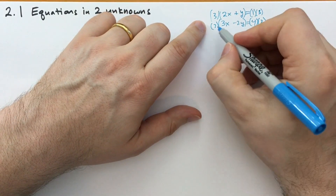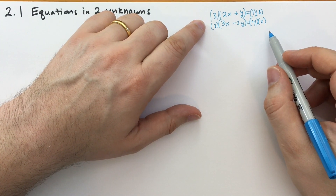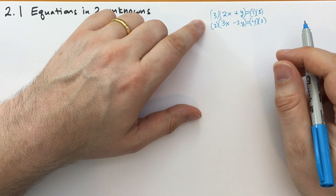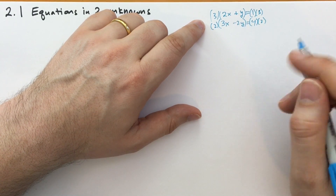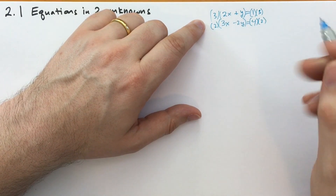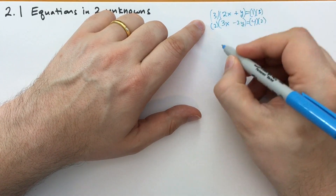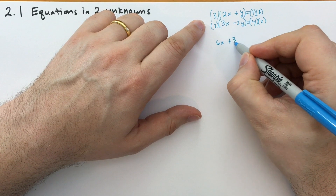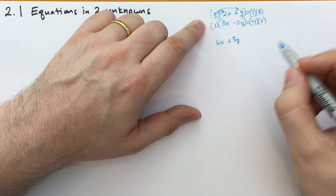If you're wondering why we're allowed to multiply both sides of the equations by a certain number, the answer has to do with rational numbers, cross multiplication, and simplification. You're simply multiplying both sides by 3. So the top equation becomes, distributing the 3 out, 6x plus 3y. The 3 has to distribute to both terms.